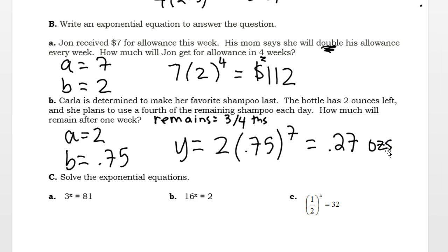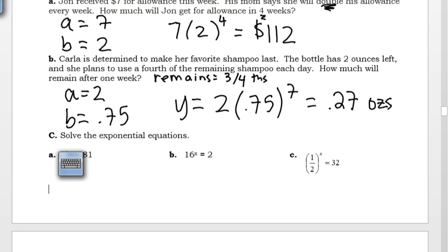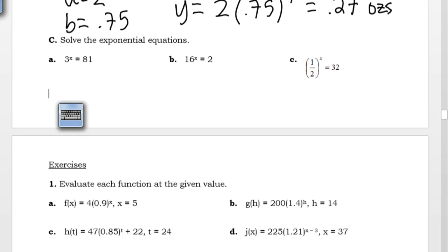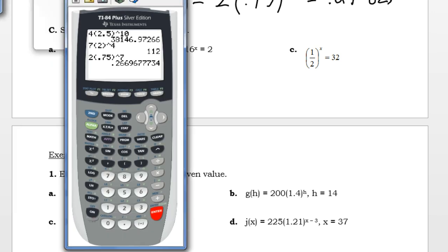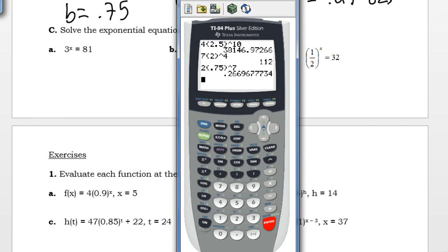Letter C is asking us to solve some exponential equations. Now, we will learn how to solve these equations using the symbolic method in a later lesson. At this point, we're just going to use some guessing, some checking, and some calculator tools to help us get these answers. So, 3 to the power of x means 3 times itself. How many times is going to give me 81? I can do this recursively if I remember how to do that.